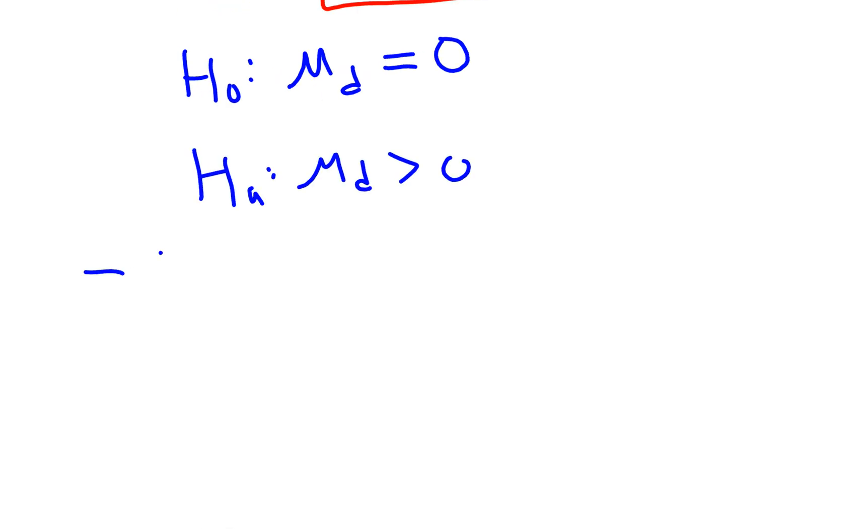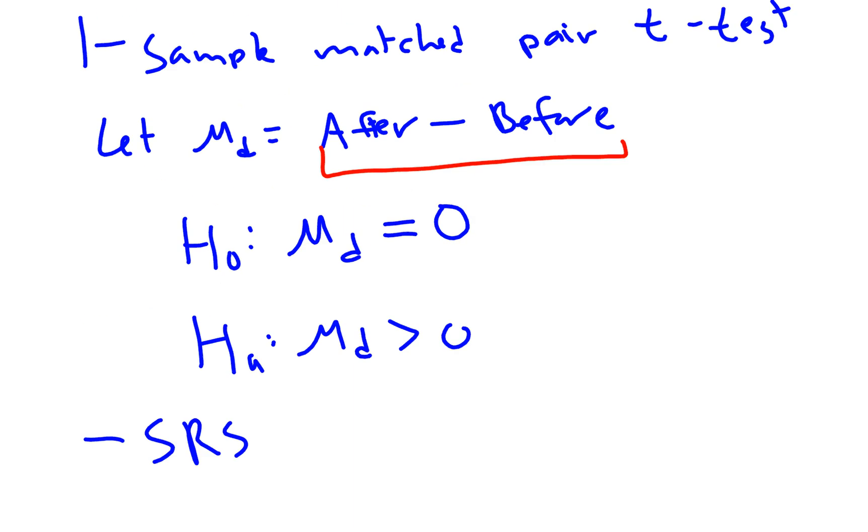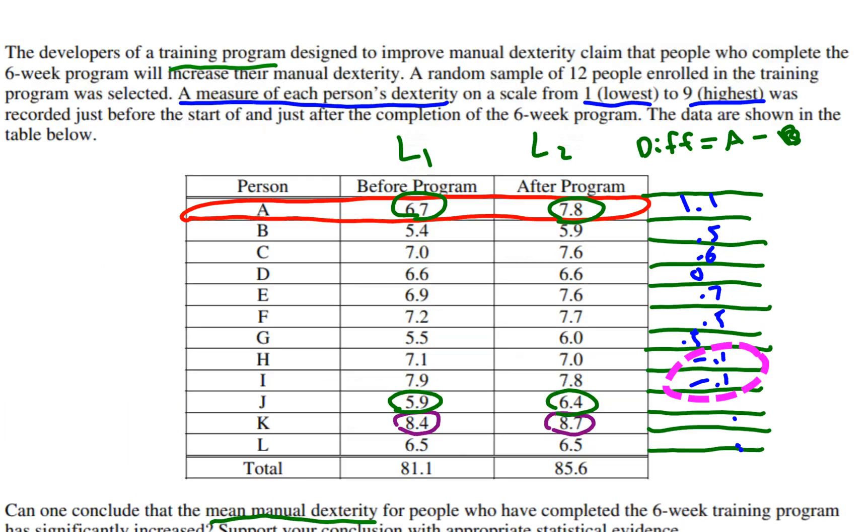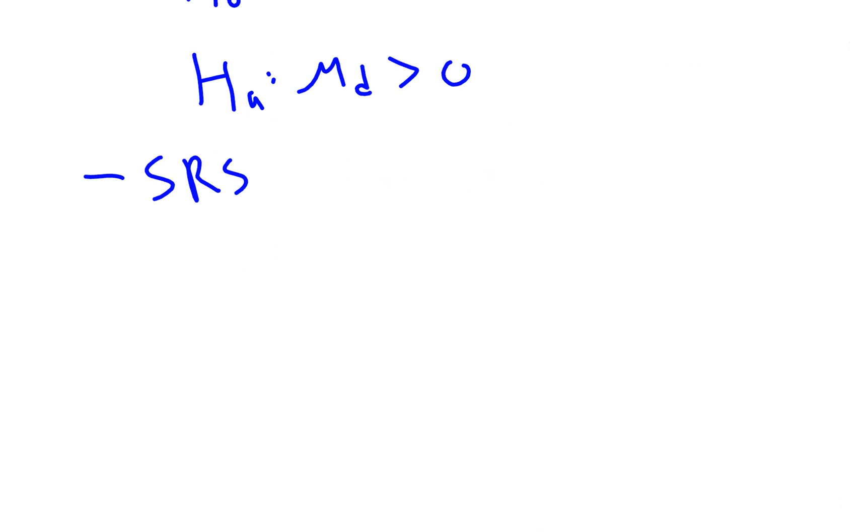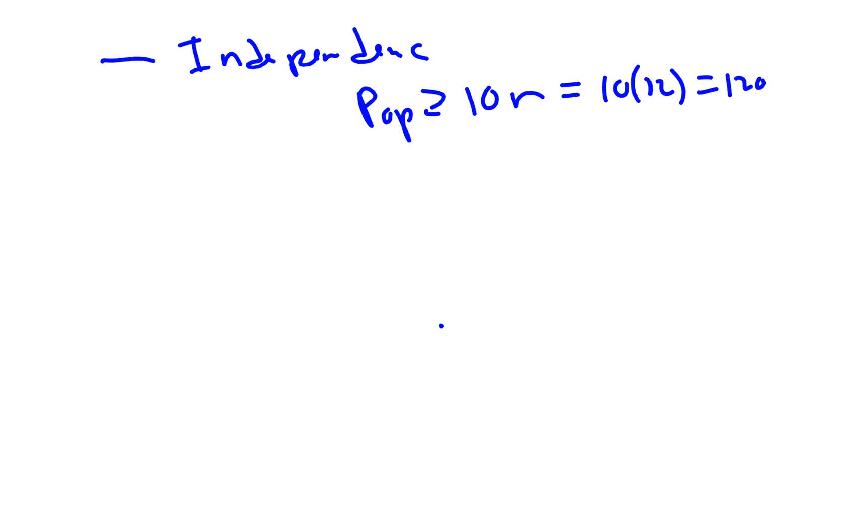First thing you do is check: was there a simple random sample done or some kind of random assignment? Let's see what it says: a random sample of 12 people. So that's always good. It's nice when they tell us that, otherwise we have to assume it. Check that off. Secondly, you have to check for independence. For independence, you want to make sure that your population size is greater than 10 times the sample size. So there were 12 people, so 10 times 12 or 120 people. We have to assume there's more than 120 people who have been through this program.